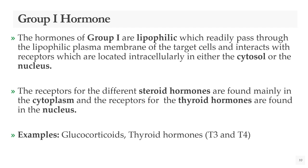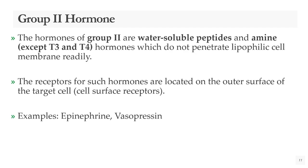Group 2 hormones are water-soluble peptides and amines that do not readily penetrate the lipophilic cell membrane. The receptors for these hormones are located on the outer surface of the target cell. Examples include epinephrine and vasopressin. I hope you are clear with this topic — if you like the video, please press the like button and share it with your friends. Thank you.